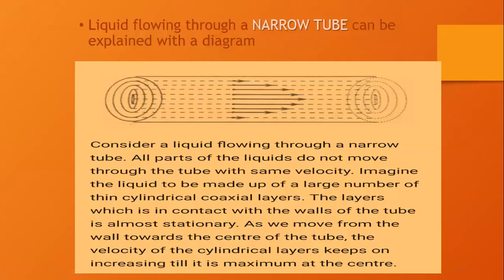We can visualize viscosity in a narrow tube in the form of concentric circles. Molecules move in the form of parallel layers in a narrow tube. These layers have different rates of movement. The layers which are close to the wall move very slowly.